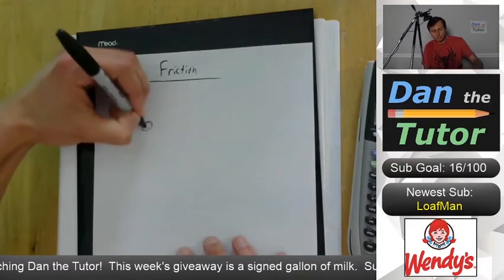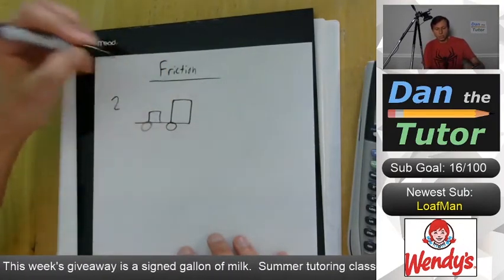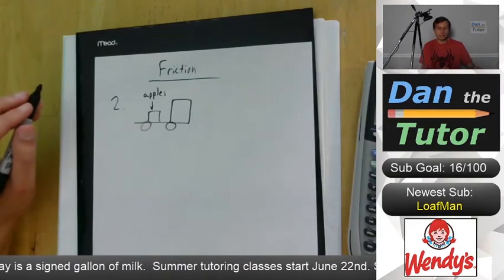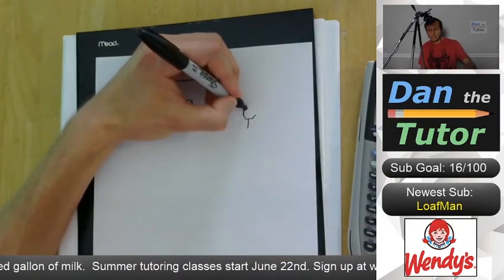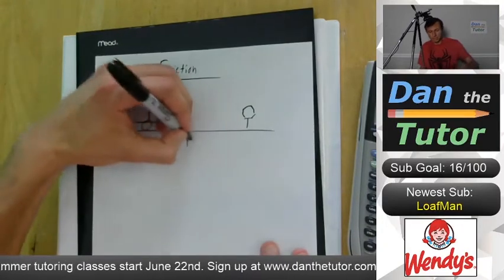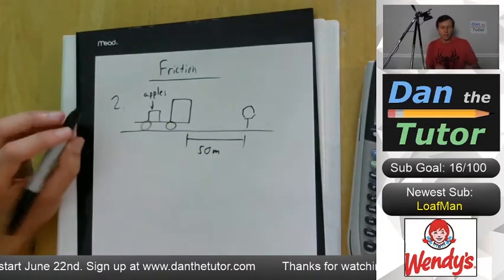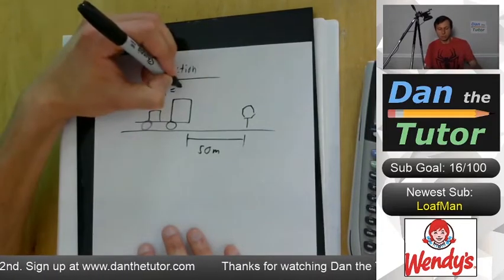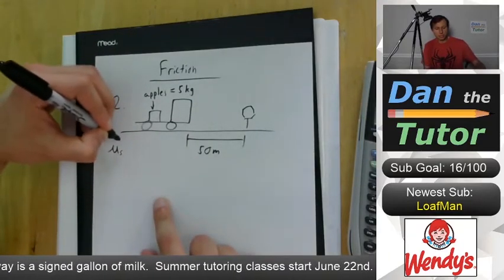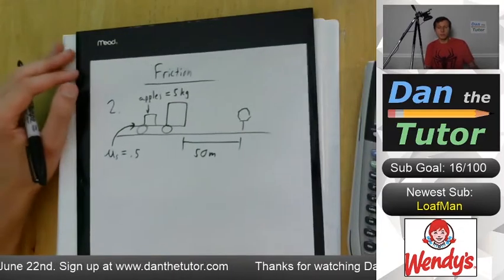Let's say we have a truck, and on this truck we have a crate of apples. We have a stop sign that the truck must stop at, because that's what trucks do at stop signs — they slow down. The distance is 50 meters away. The mass of the apples is 5 kilograms, and the coefficient of static friction between the crate of apples and the truck is 0.5.